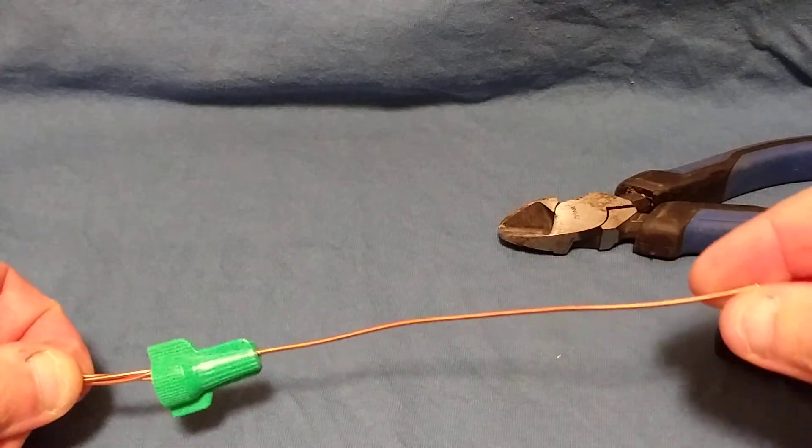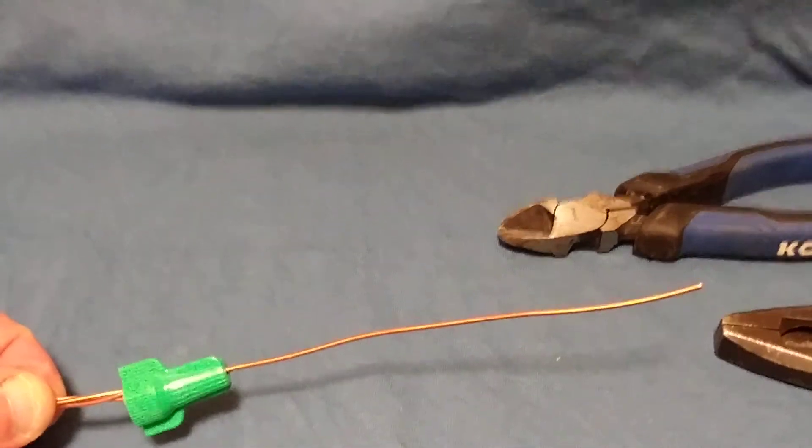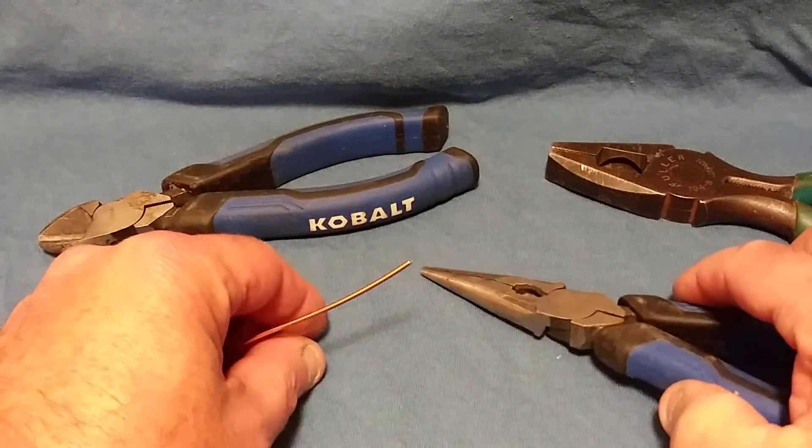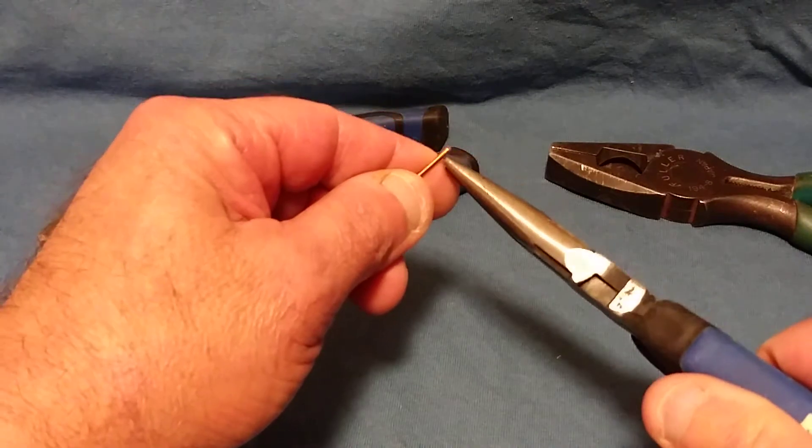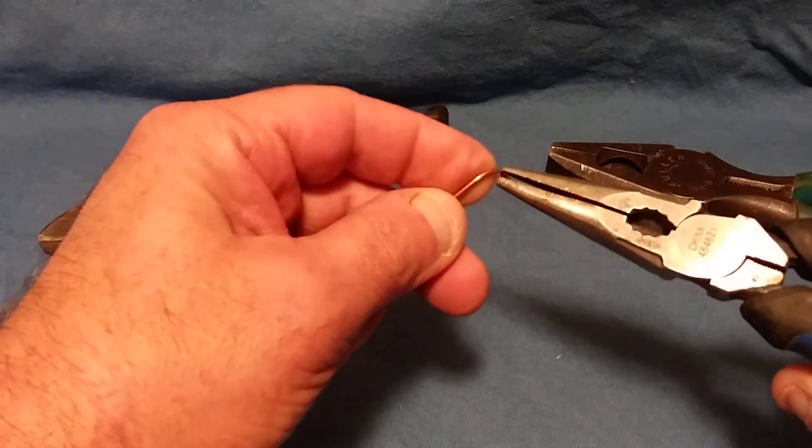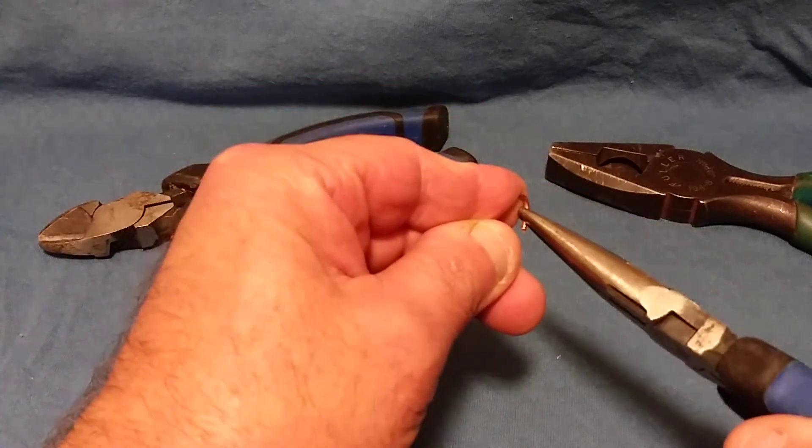And that is your ground wire pigtail. And when you're done, you take your needle nose pliers and you would make a loop the direction that the green screw would turn.